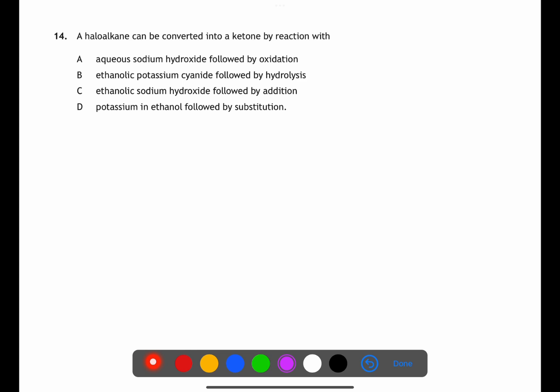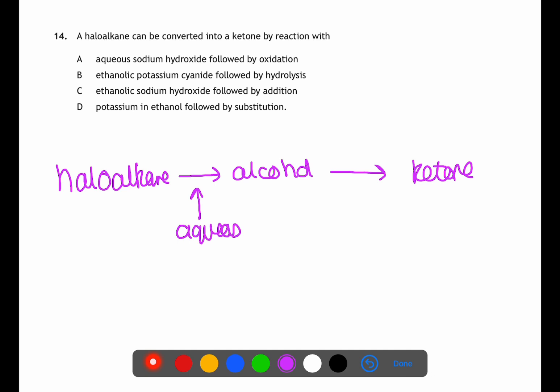In question 14 we're looking at synthesis. We're trying to turn a haloalkane into a ketone. The only reaction which you know to produce a ketone is oxidation of a secondary alcohol. This means that there must be a middle step where we have turned our haloalkane into an alcohol before then turning it into a ketone. To do this we will first use our haloalkane with a nucleophilic substitution reaction to produce an alcohol using aqueous hydroxide.